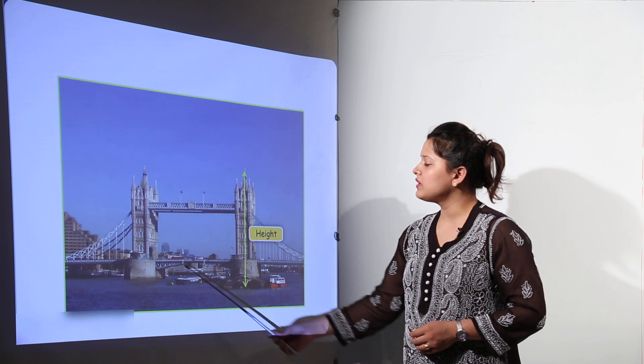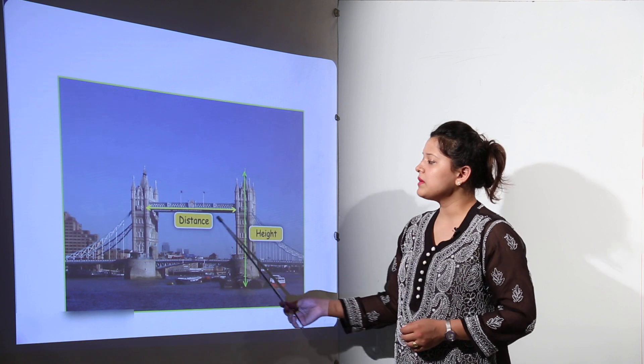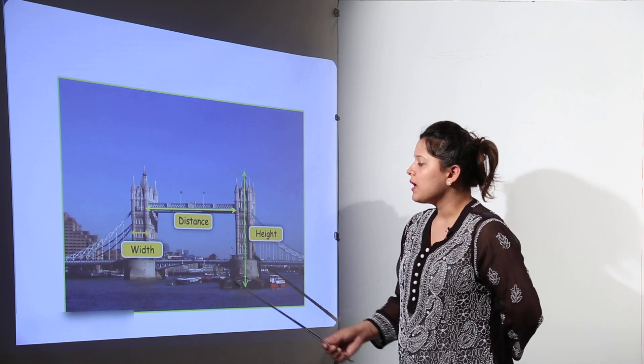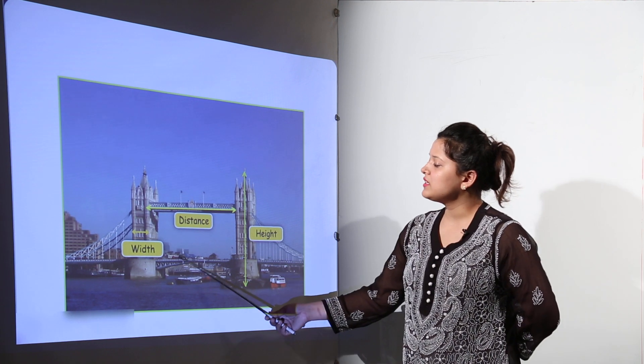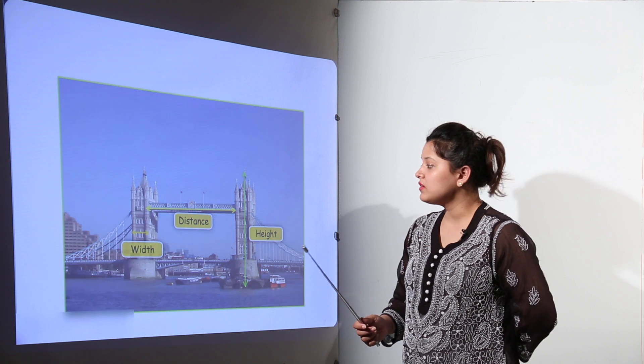What you see over here is a bridge. We can measure its height, we can measure its distance and we can measure its width as well. So how to measure these? We can measure these by the same units that we have learnt.